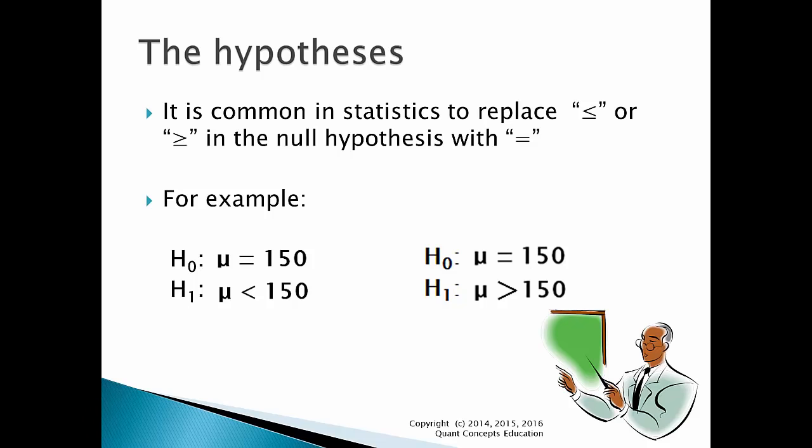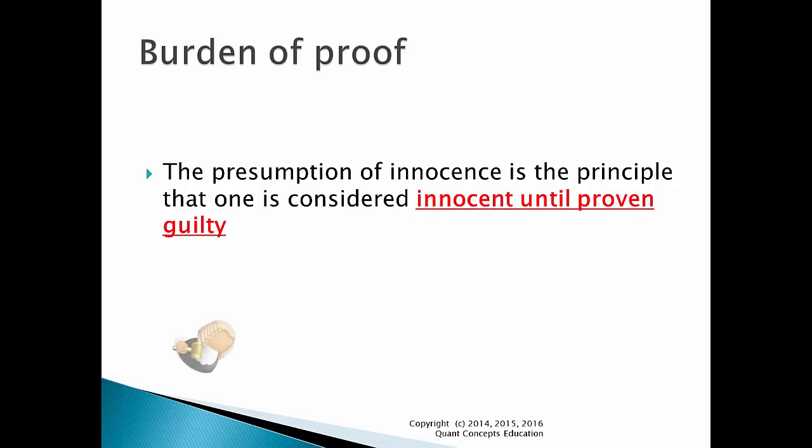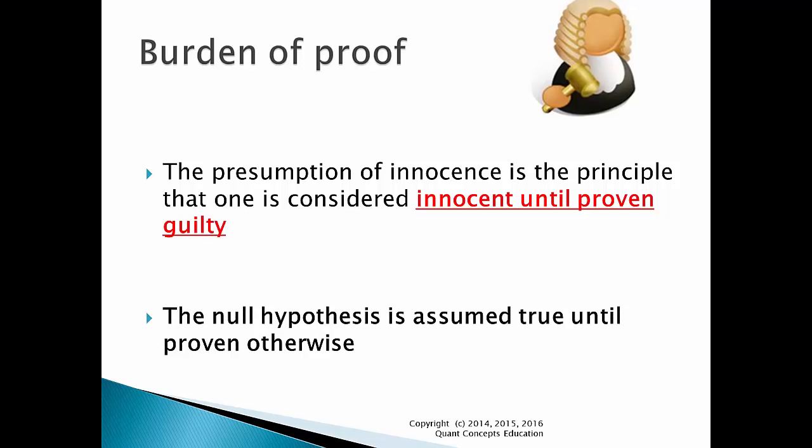What is the burden of proof? This concept is similar to that in most modern legal systems. The defendant is assumed innocent until proven guilty. In statistics, we use a similar concept: the null hypothesis is assumed true until proven otherwise. This means that only until we gather sufficient evidence to support the alternate hypothesis, we will assume the null hypothesis holds true. Think of our bowling example — we gave Sam the benefit of the doubt that his bowling average is 150 until proven otherwise, until we see him bowl an average of 40 over our three games with him.